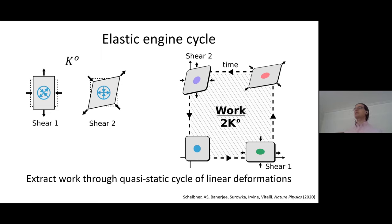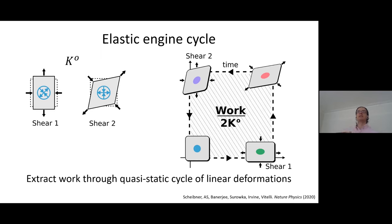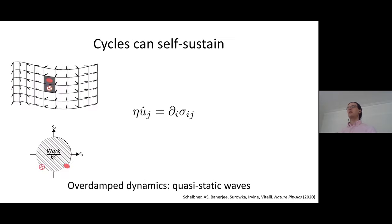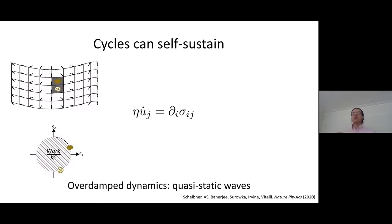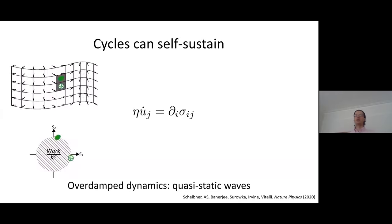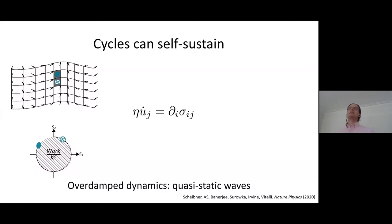The interesting thing is that this work extraction is extra — the cycle used to extract it is quasi-static. There's nothing rate-dependent about how the work has been extracted, which is different from many engines we're used to where rates matter. In particular, if you only had a one-dimensional piston, the only way to extract work would be to have some asymmetry in the rate between going forwards and backwards.